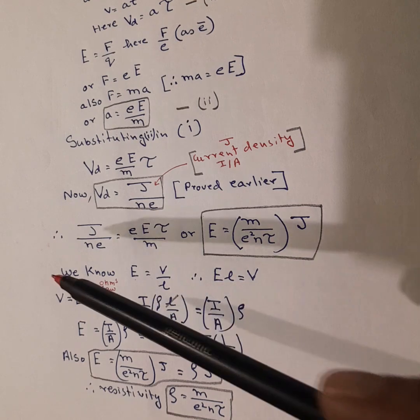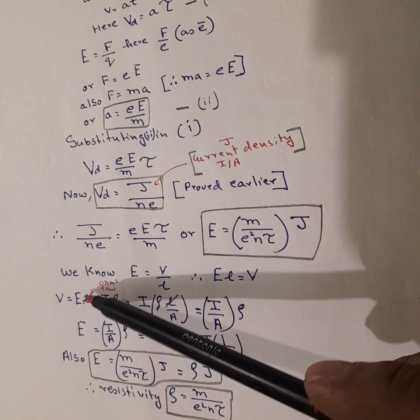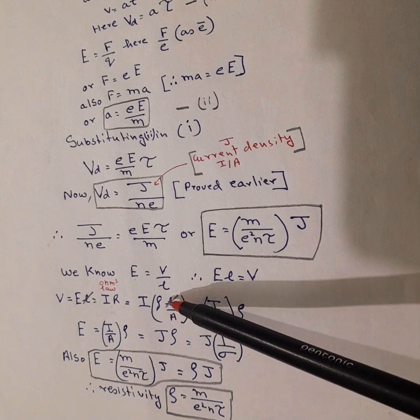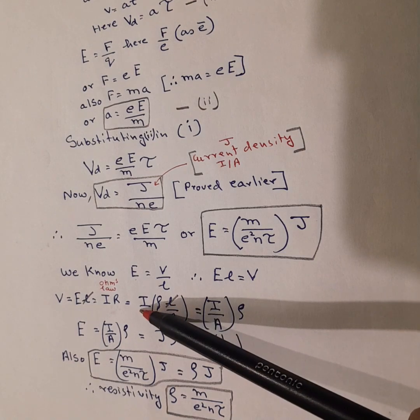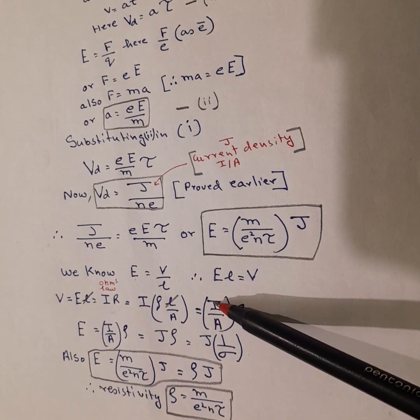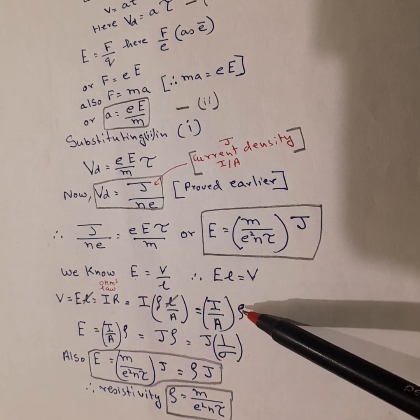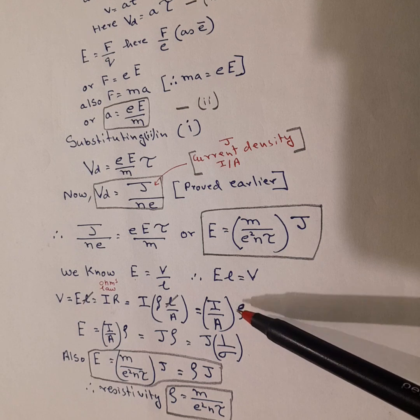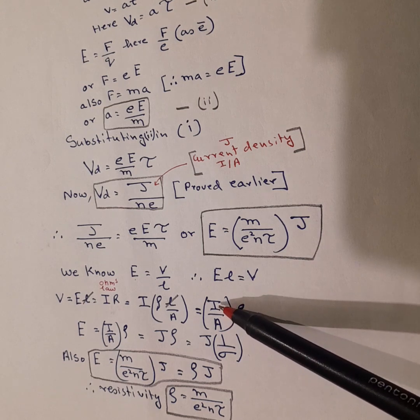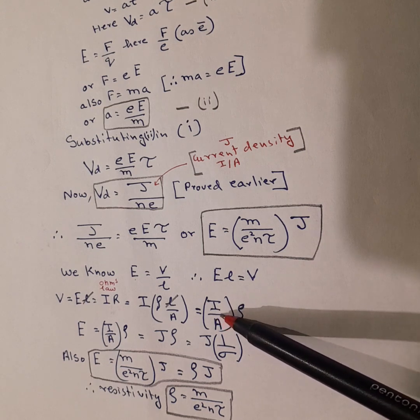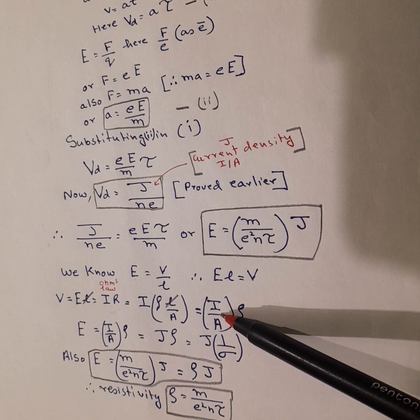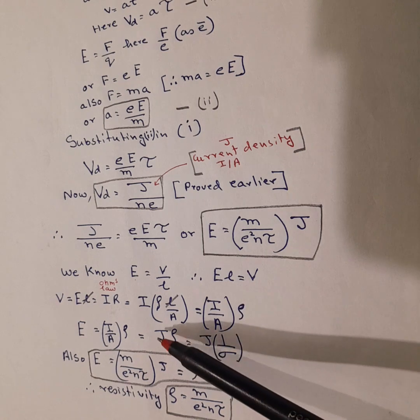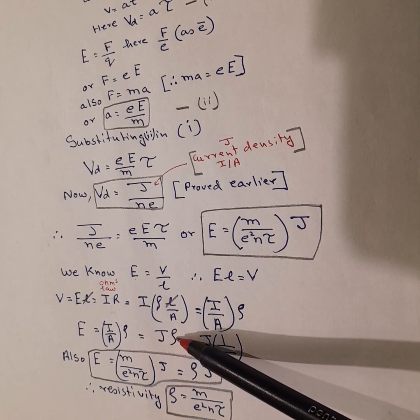Now this and this, let's check it out. L is common, so it gets cancelled. So what we end up with is, let's take A out there, so it becomes I over A into rho. Now already mentioned that I over A is J, that is current density J. So it becomes J rho.